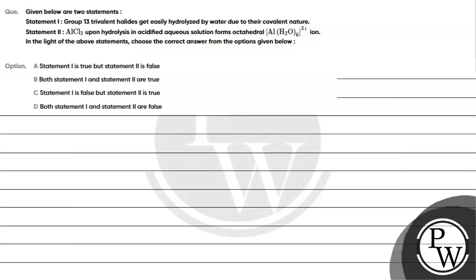Given below are two statements. Statement 1: Group 13 trivalent halides get easily hydrolyzed by water due to their covalent nature. Statement 2: AlCl3 upon hydrolysis in acidified aqueous solution forms octahedral Al(H2O)6^3+ ion. In the light of above statements, choose the correct answer from the options given below.